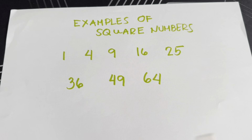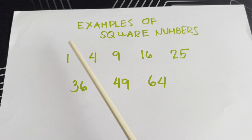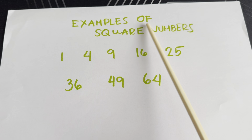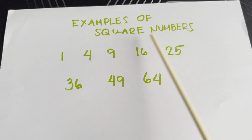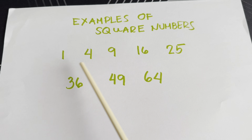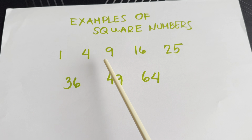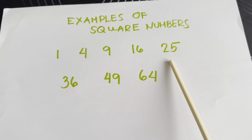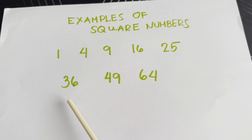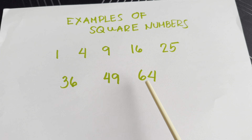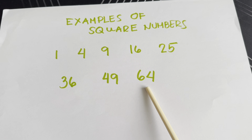And now let's see some examples of square numbers: 1, 4, 9, 16, 25, 36, 49, and 64.